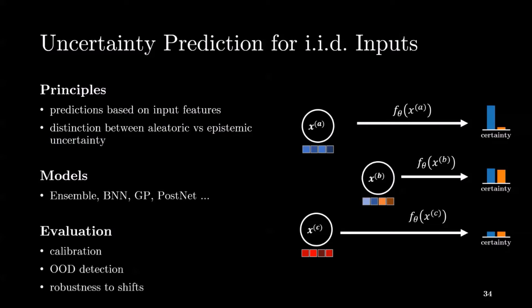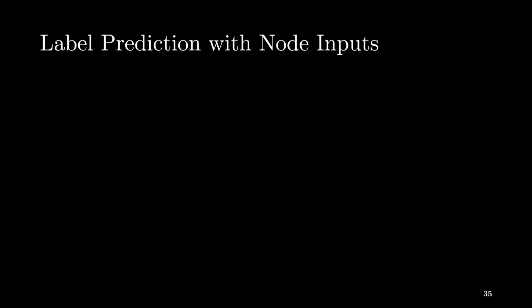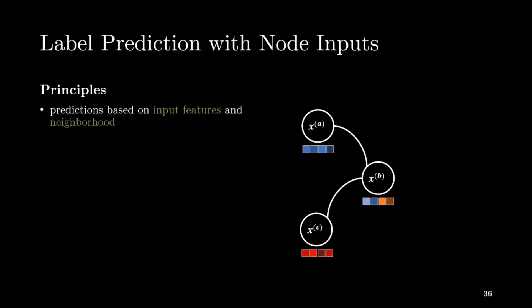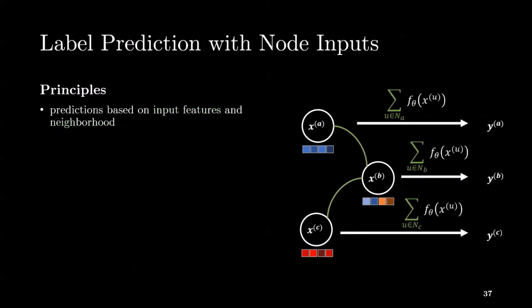Experimental evaluation also exists to evaluate the quality of uncertainty predictions. These metrics are useful in real-world applications for trust and safety reasons. Examples are calibration, OOD detection, or robustness to feature shifts. However, uncertainty estimation for interdependent node inputs is more complex and indirect. In this case, predictions are based on both input features and neighborhood information. Recent graph neural networks successfully propose to enrich the information of the features of a single node by aggregating them with the features of its neighborhood, leading to the distinction between predictions without network effects and predictions with network effects based on neighborhood aggregation. However, the desired behavior of uncertainty estimation for interdependent node classification is left unclear.